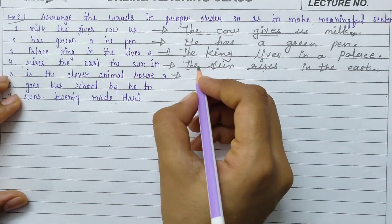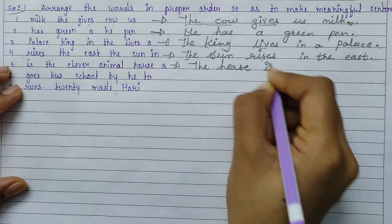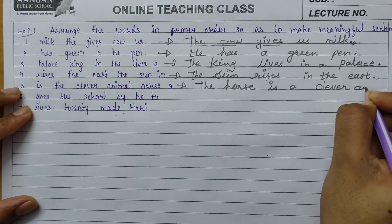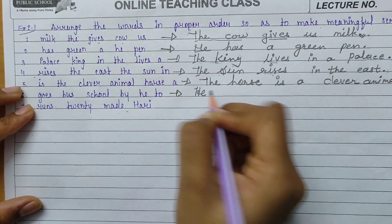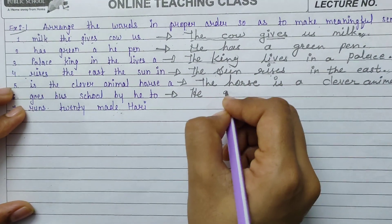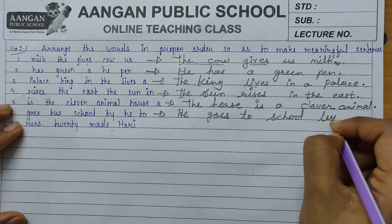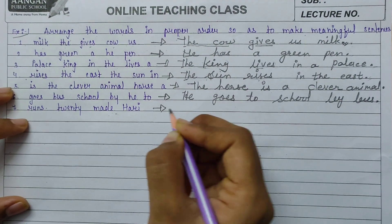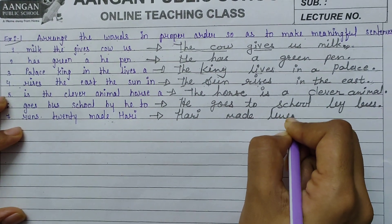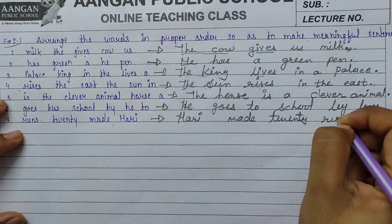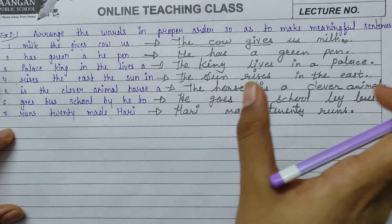Fifth: 'is the clever animal horse a' — the answer is: 'The horse is a clever animal.' Sixth: 'goes by school by he to' — the answer is: 'He goes to school by bus.' Seventh: 'runs 20 made hurry' — the answer is: 'Hurry made 20 runs.' Here we have seven sentences, all arranged in proper order as one meaningful sentence each.